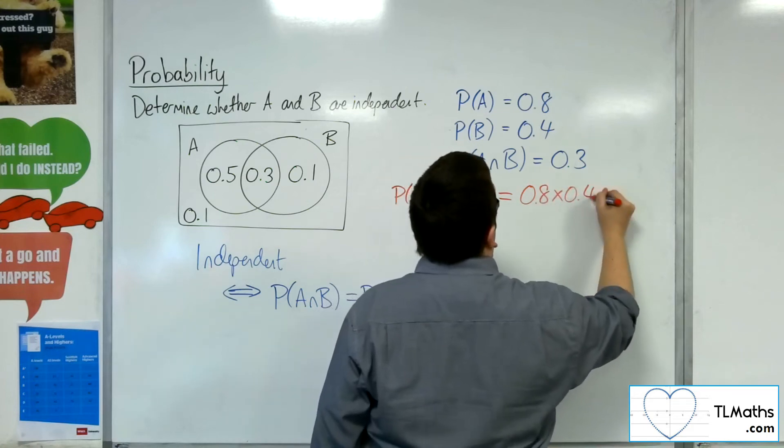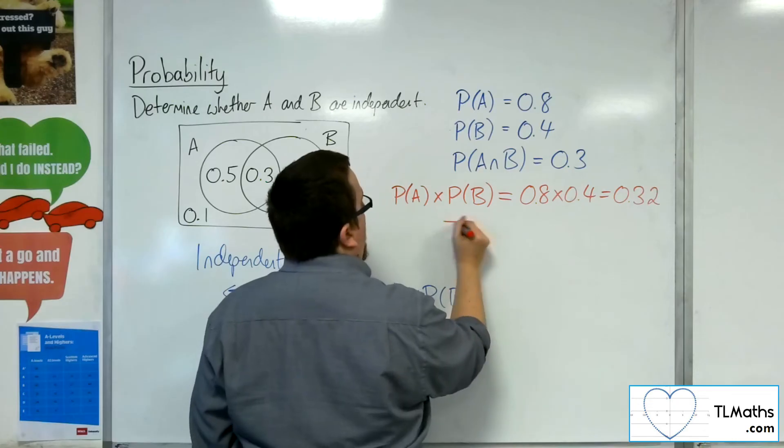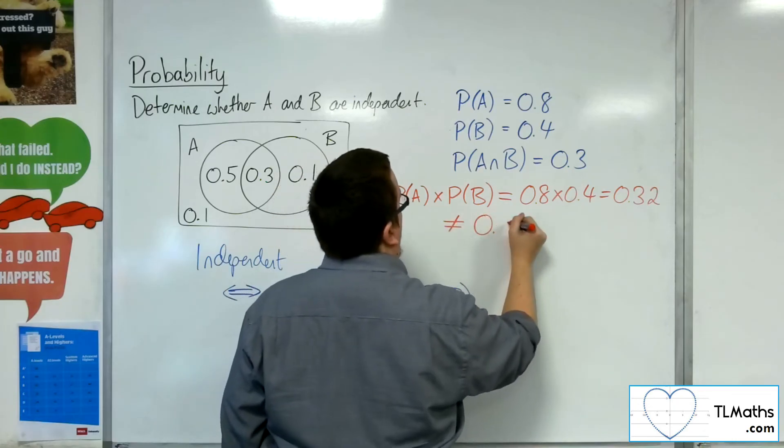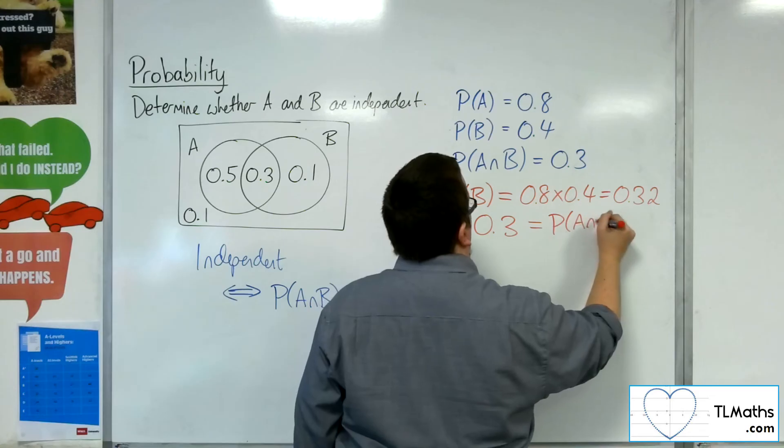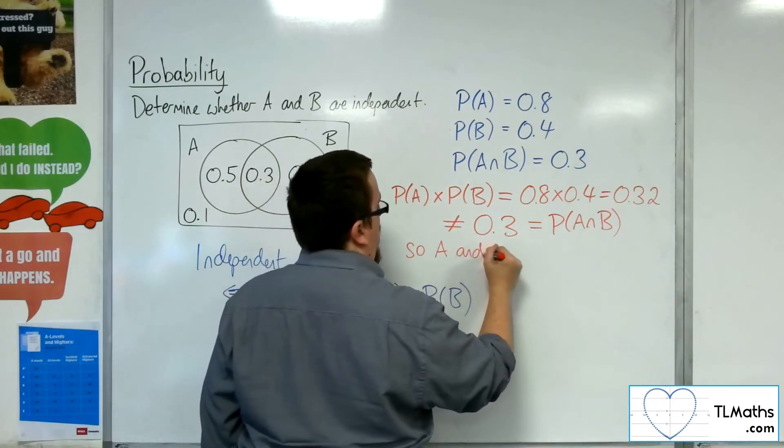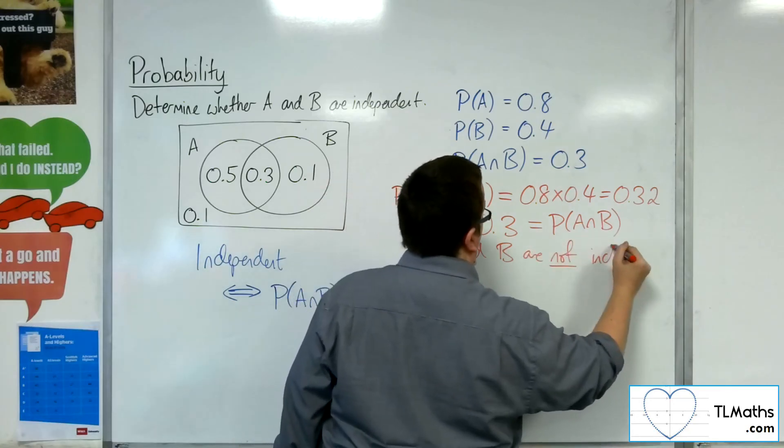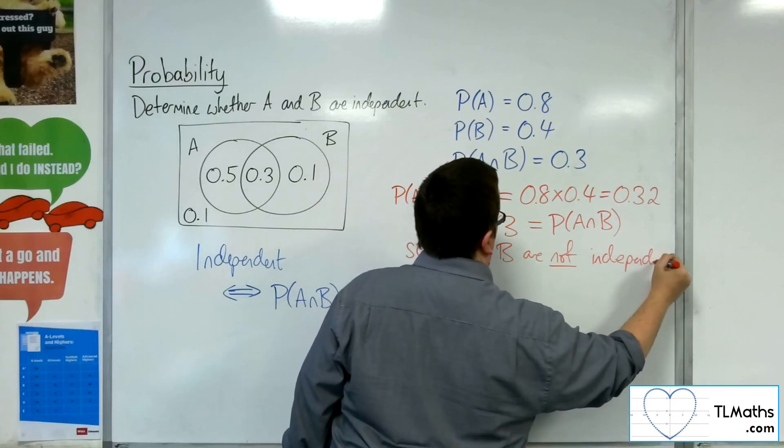and that's 0.32. But that is not the same as 0.3, the intersection. So A and B are not independent.